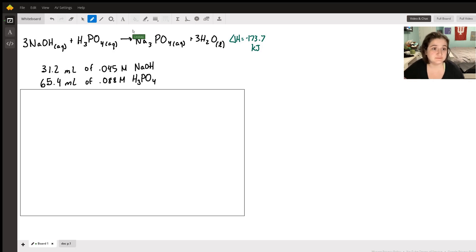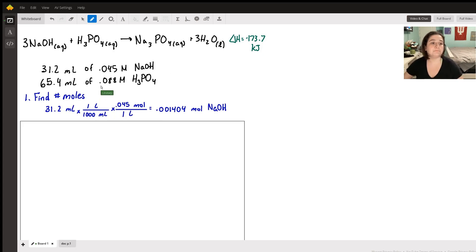I like to do this in steps. First step is to find the number of moles for both our sodium hydroxide and our phosphoric acid, our two reactants. For sodium hydroxide, we have 31.2 milliliters times one liter in 1000 milliliters, times molarity which is moles over liters, so 0.045 moles over one liter, that gives us this number right here.